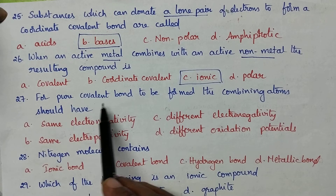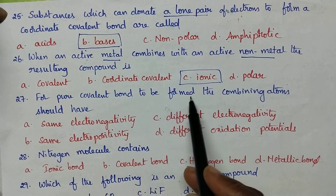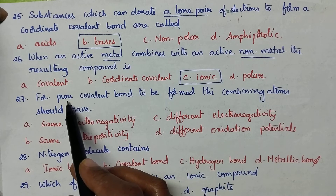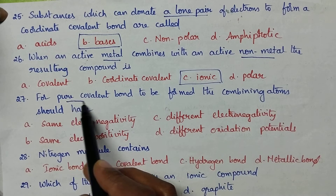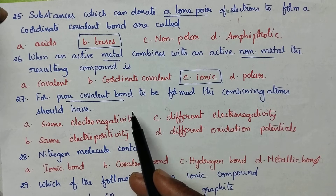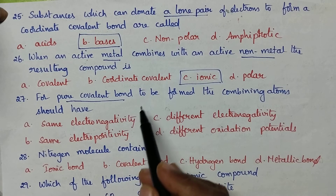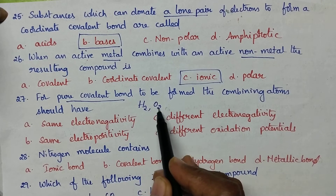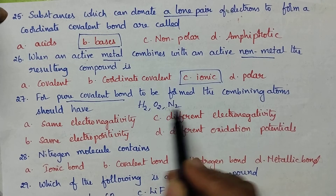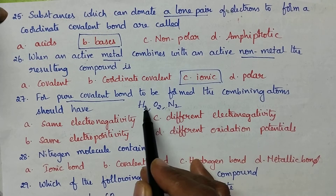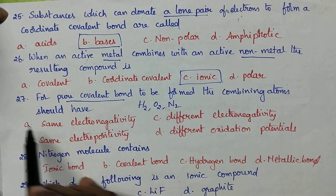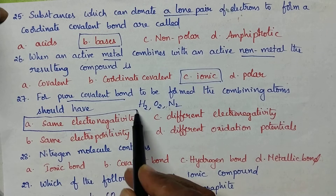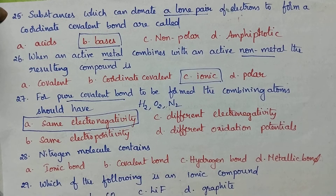For a pure covalent bond to be formed, the combining atoms should have: a pure covalent bond is formed between atoms of the same element — best examples are H₂, O₂, N₂ — meaning the two atoms have the same electronegativity. So option A is the right answer.